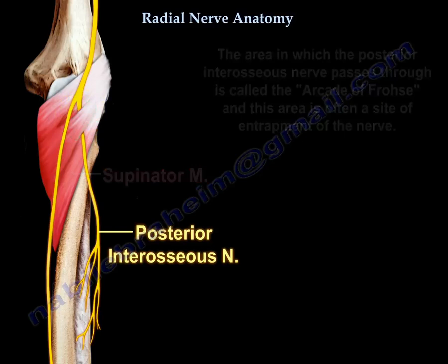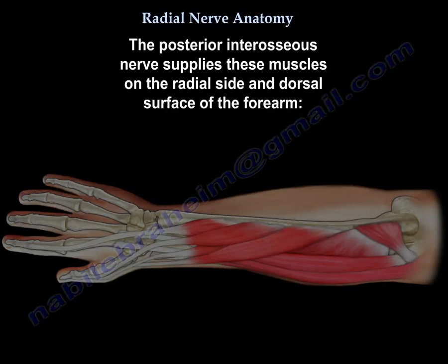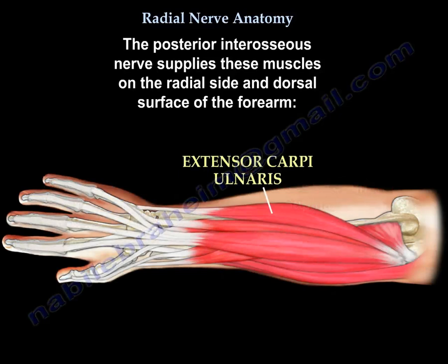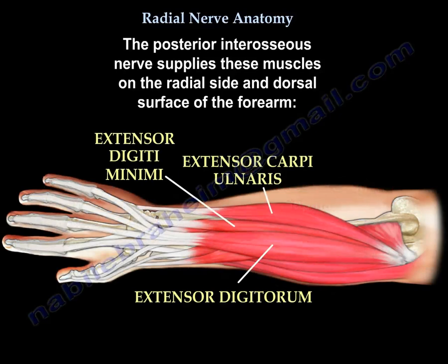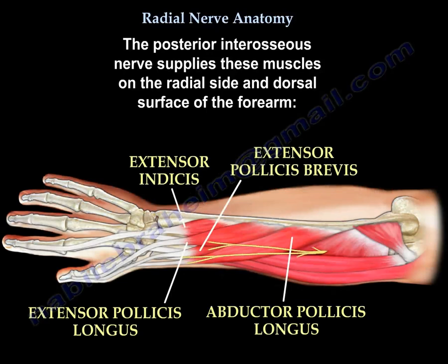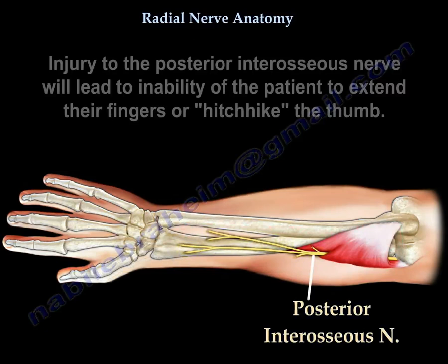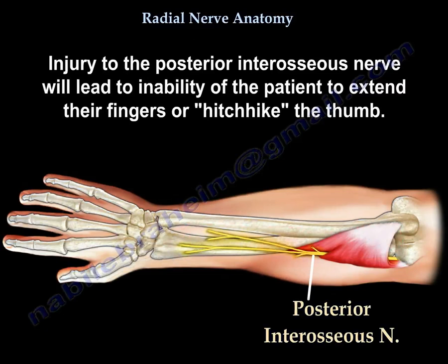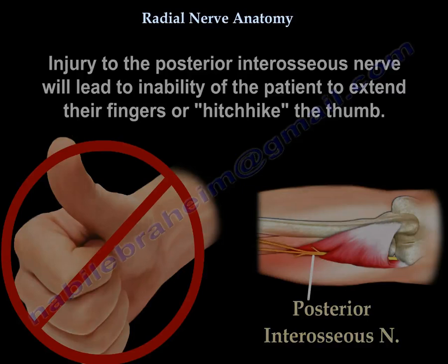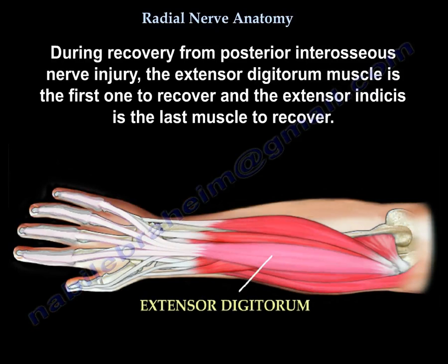The posterior interosseous nerve supplies muscles on the radial side and dorsal surface of the forearm: the extensor carpi ulnaris, the extensor digiti minimi, the extensor digitorum, the abductor pollicis longus, the extensor pollicis brevis, the extensor pollicis longus, and the extensor indicis. The posterior interosseous nerve does not supply cutaneous sensation — it is a purely motor nerve. Injury to it leads to inability to extend the fingers or hitchhike the thumb. During recovery, the extensor digitorum is the first muscle to recover and the extensor indicis is the last.